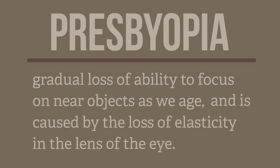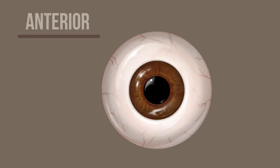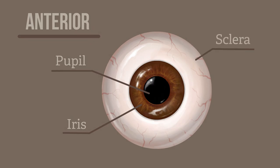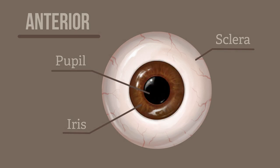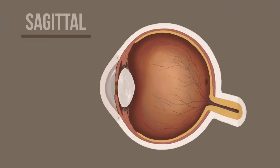In order to better understand presbyopia, we must first take a look at the anatomy of the eye. The front or anterior of the eye includes four basic parts. The pupil is a hole in the iris that allows light to enter the eye. The colored part around the pupil is called the iris. The sclera is the white outer layer, and towards the front of the eye the outer layer over the pupil and iris becomes clear and is called the cornea. As we look inside the eye from a sagittal view, we can see the muscles that control the shape of the lens.